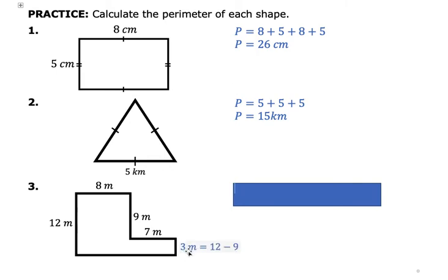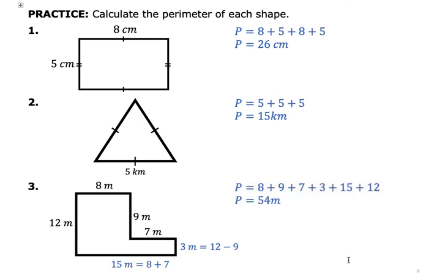So 12 minus 9 is 3, and this is unknown. Now, this length isn't given, but we know this edge and this edge. So 8 plus 7, that's going to be 8 plus 7, which is a total of 15. Altogether we add our edges, 8 plus 9 plus 7 plus 3 plus 15 plus 12, and our total is 54 meters.